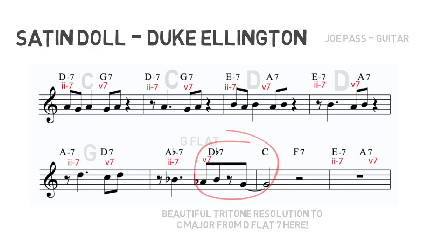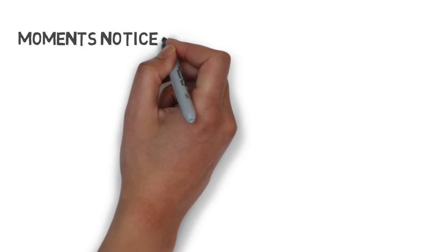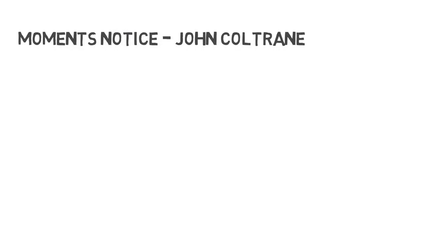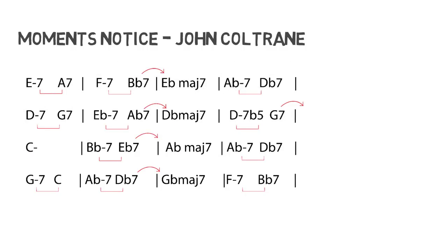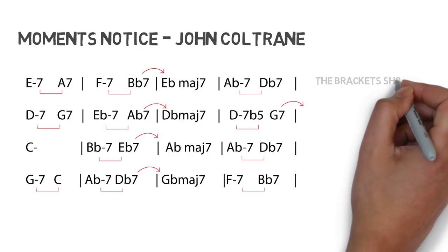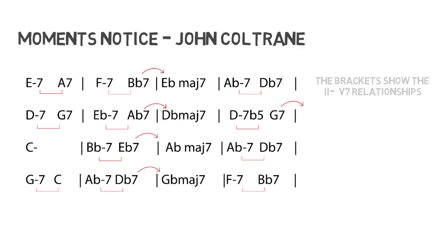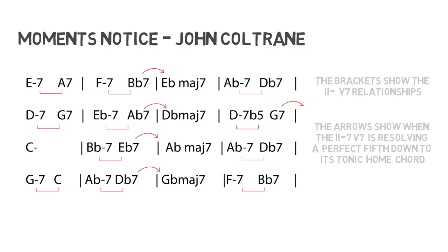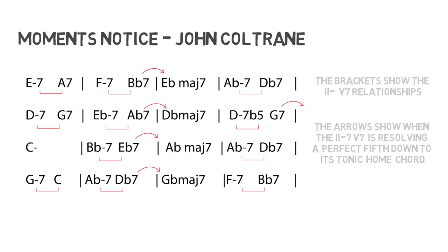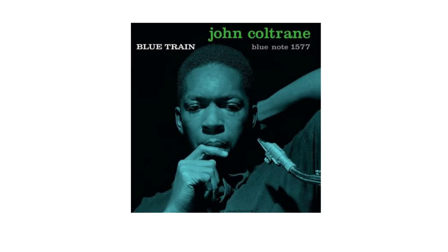To finish the musical examples, let's listen to John Coltrane's 'Moment's Notice.' You can see that 'Moment's Notice' has many two-fives, and a lot of the chord pairs have chromatic relationships rather than diatonic ones. This creates a lovely color on which Coltrane so beautifully weaved his classic melody.